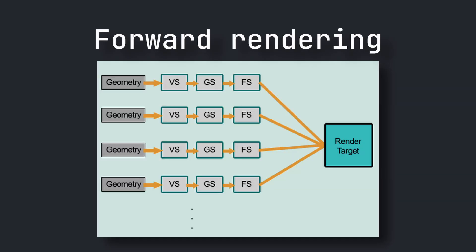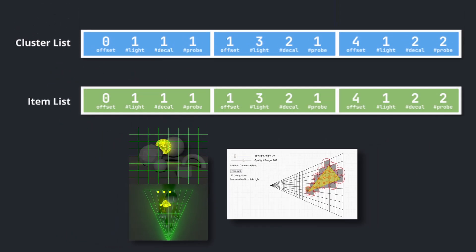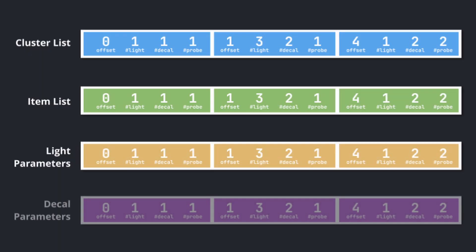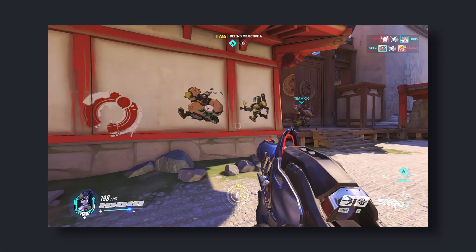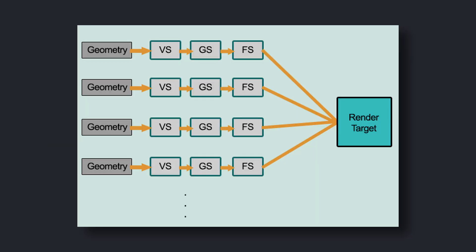But there is a twist — forward rendering is making a comeback. Acceleration structures are getting better each day, and some realized: why not use the same acceleration structure — in this case, clusters — that already stores lights, but also have them store decals? This means we can cluster decals and render them in a forward way. Instead of checking every decal for every object, we group them into clusters and only check relevant ones. This means forward rendering can handle both lights and decals more efficiently.